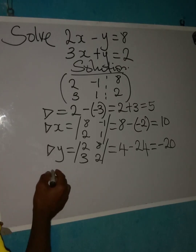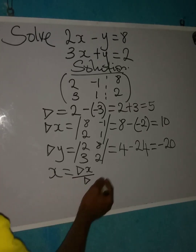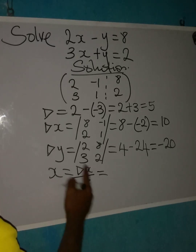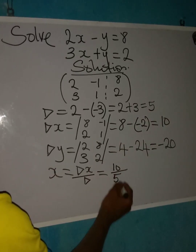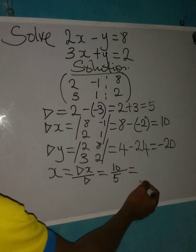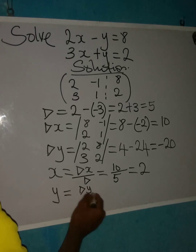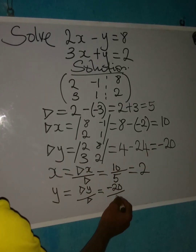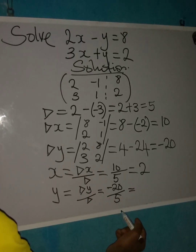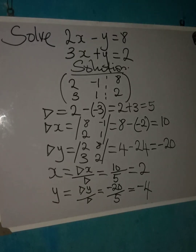Now we can find the values of X and Y. X equals DX over D, which is 10 over 5, so X equals 2. Then Y equals DY over D, which is minus 20 over 5, giving us minus 4. So the value of X is 2 and the value of Y is minus 4. This is how to solve an equation using the determinant method. Thank you for watching.